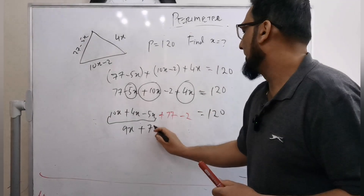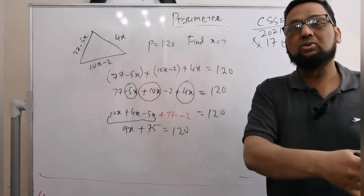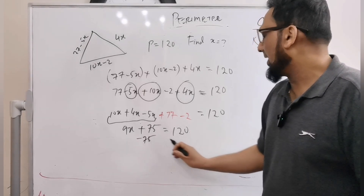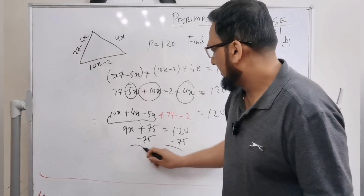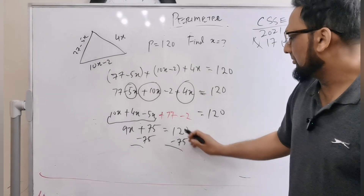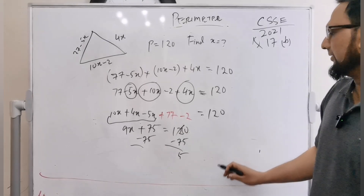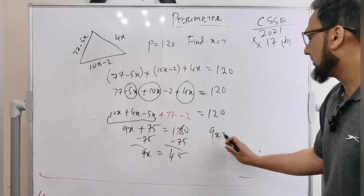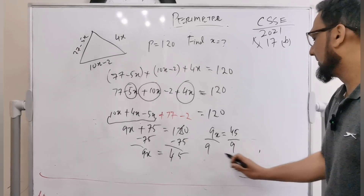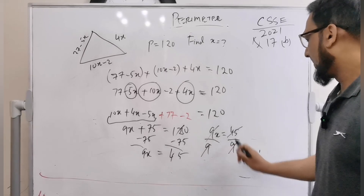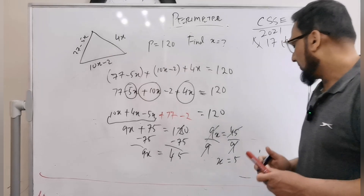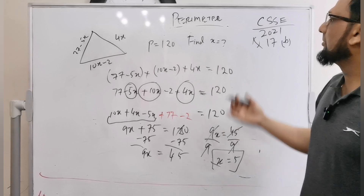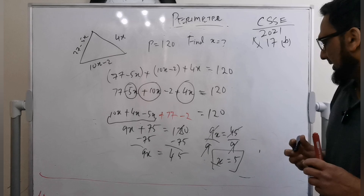We have 9x plus 75 equals 120. Subtract 75 from both sides: 120 minus 75 equals 45, so 9x equals 45. Dividing both sides by 9, x equals 5. So the value of x is 5, which is what the examiner asked us to find.